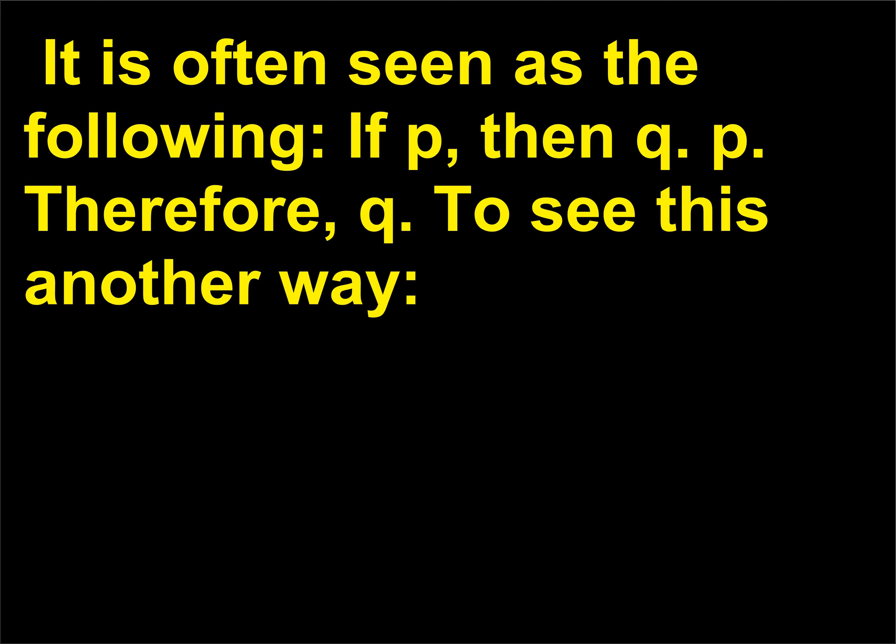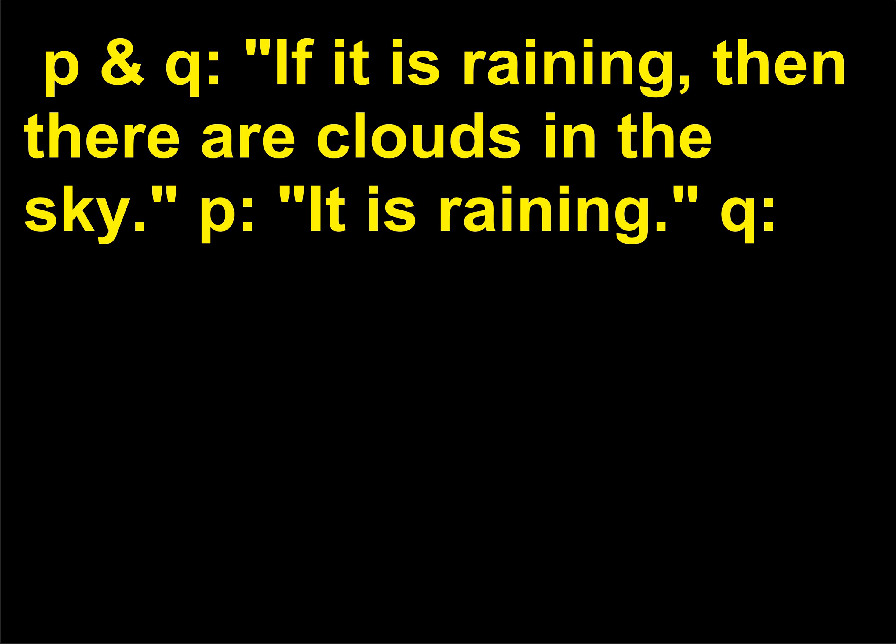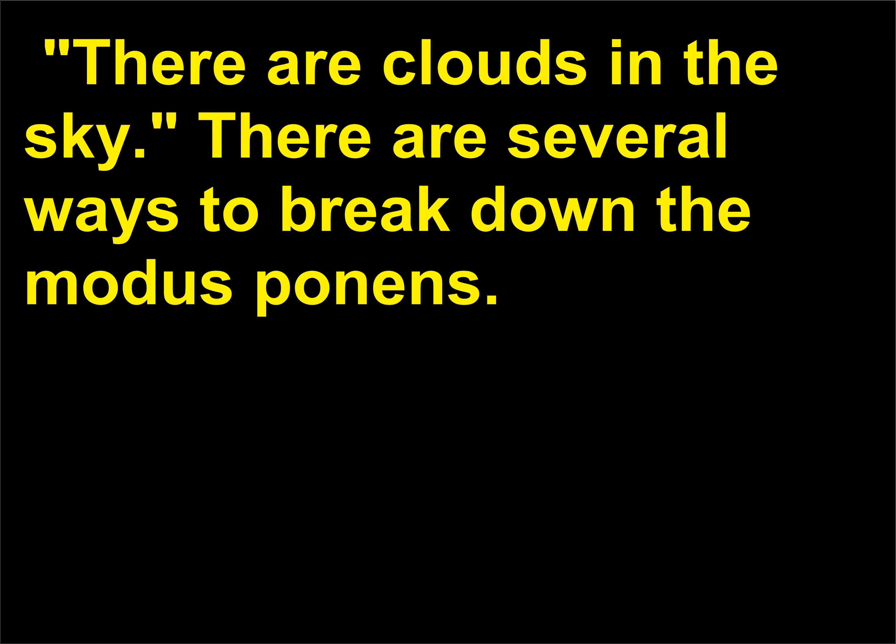To see this another way: P and Q — if it is raining, then there are clouds in the sky. P: it is raining. Q: there are clouds in the sky.